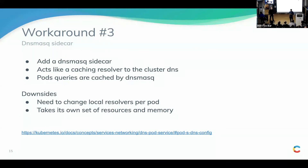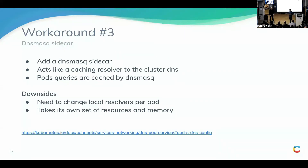Another option is to use a dnsmasq sidecar. You add an extra container as part of a deployment running dnsmasq. That dnsmasq container talks to cluster DNS, caches all queries, and your application container talks to dnsmasq. This reduces node traffic going to cluster DNS. The downside is it needs to be configured per deployment and needs its own set of resources — so if you have 50 replicas, that's 50 times the memory and CPU overhead.